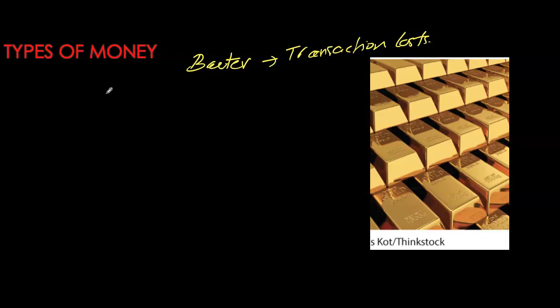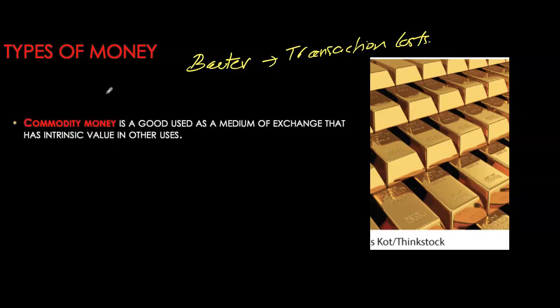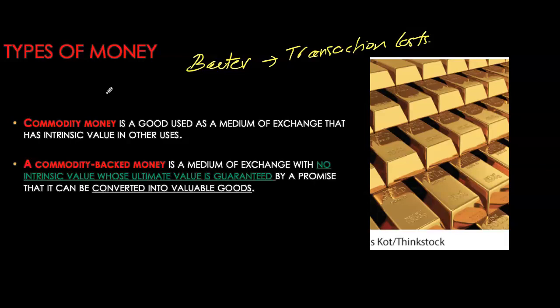As societies developed, they started moving away from barter, gravitating toward certain commodities more acceptable than others for exchange. That is the first type of money we see historically: commodity money. Commodity money is any asset used as a medium of exchange that has some intrinsic value of its own. The most common types historically have been gold, silver, or other precious metals, but we've also seen examples like pearls, tobacco leaves, and even dates used in certain societies.